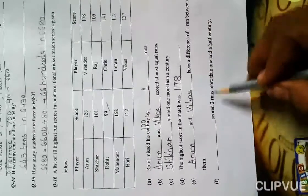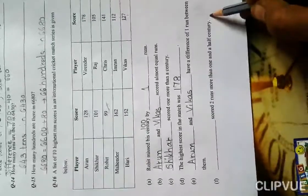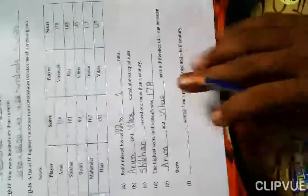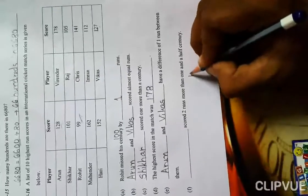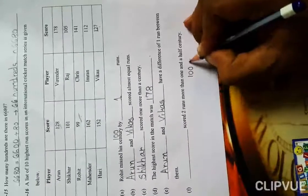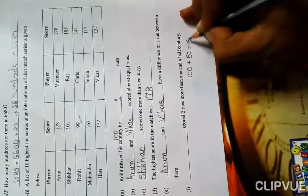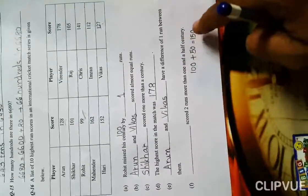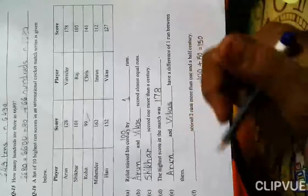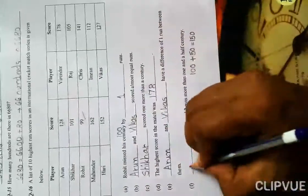Blank scored two runs more than one and a half century. I already explained in the textbook, same type of blanks are given. One century means 100 and half century means 50, so it's 150. Two runs more means 152. Whose runs are 152? Hari. So we write Hari here.